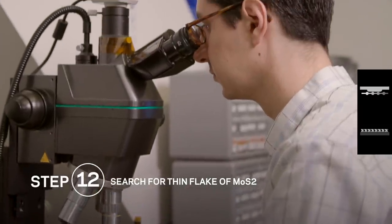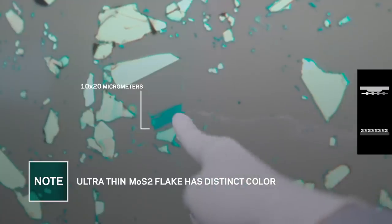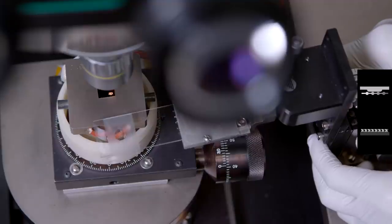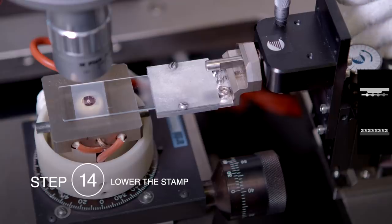In this case, we'll be searching for a flake that's one monolayer thick, or roughly three atoms, and then once again use the stamp to pick up this layer. With the only difference that the stamp already has the hexagonal boron nitride layer attached to it, and so we'll stack this molybdenum sulfide layer on the bottom.